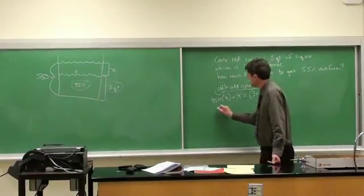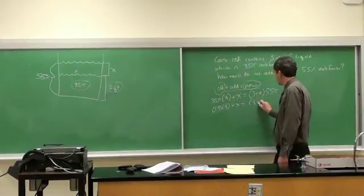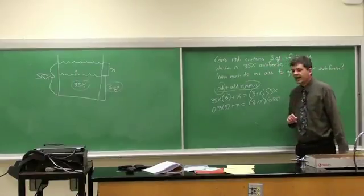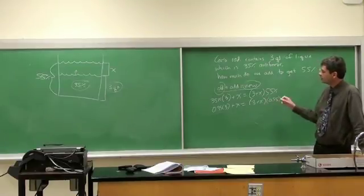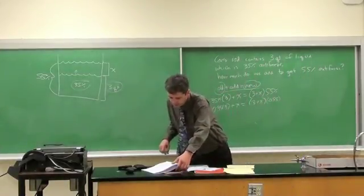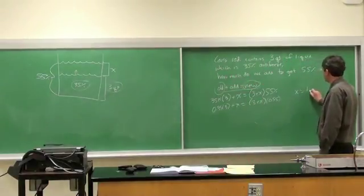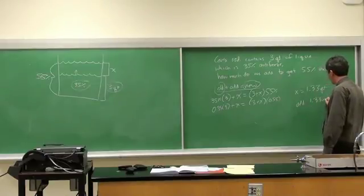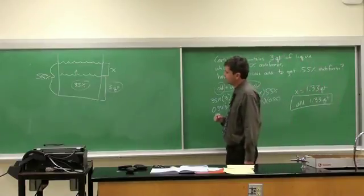And then we can translate this to be 0.35 times 3 plus x equals 0.55 times (3 plus x). And on page 100 of your book, at this point then it's just algebra, you just solve for x. On page 101 you can see the step-by-step process to get down to the answer, so I won't repeat that, but basically x equals 1.33 quarts, so you add 1.33 quarts. That's the answer to that one. So that's problem number 9 on page 101.